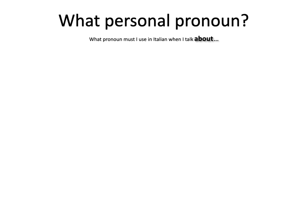So those are the pronouns, but I want us to think a little bit about how they are actually used. Let's do a little exercise — let's think about what personal pronoun I need to use when I talk about certain people or things. I have io for I, lui for he, lei for she, noi for we, or loro for they.